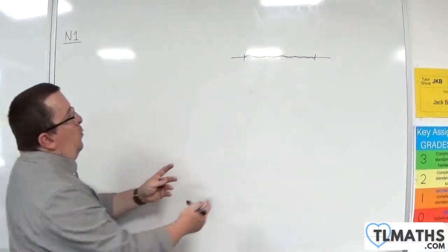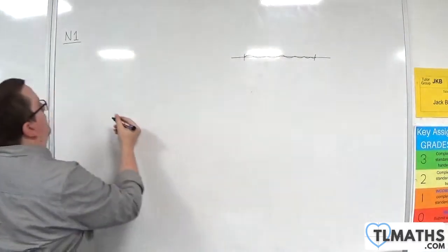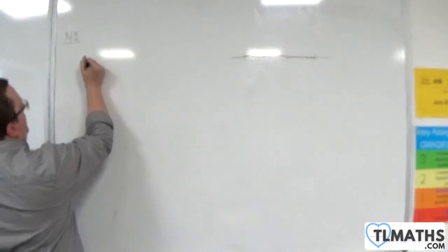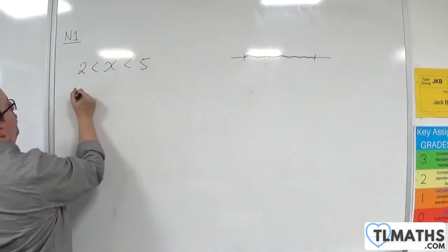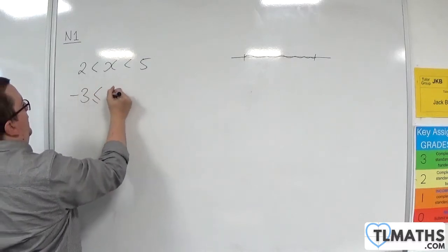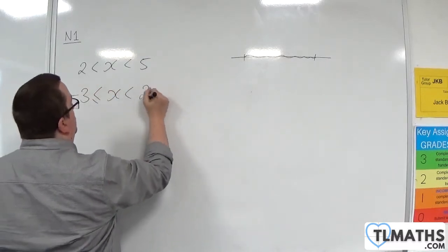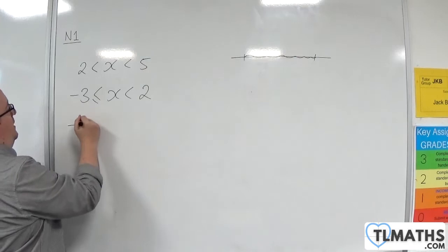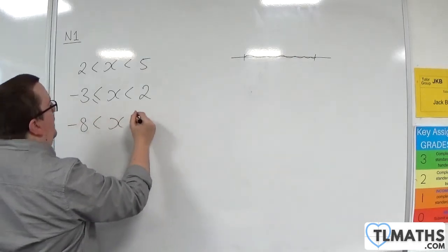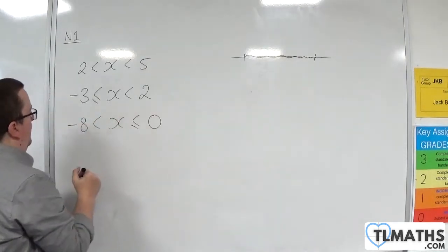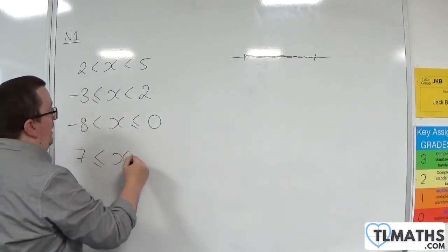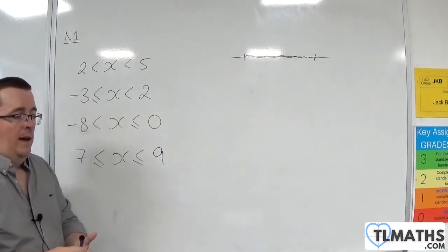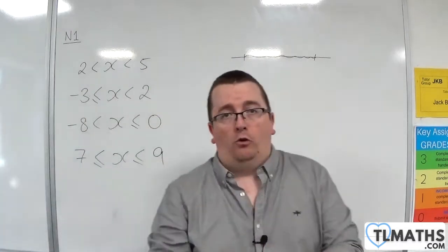So if I want a region between values, it could be something like 2 is less than x is less than 5, or minus 3 is less than or equal to x is less than 2, or minus 8 is less than x is less than or equal to 0, or 7 is less than or equal to x is less than or equal to 9. And it has to be one of these four.